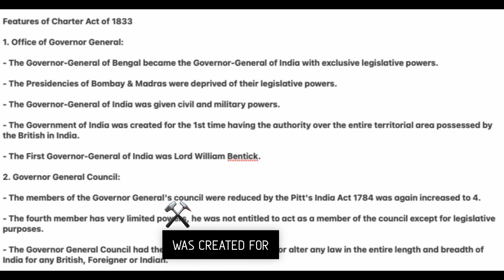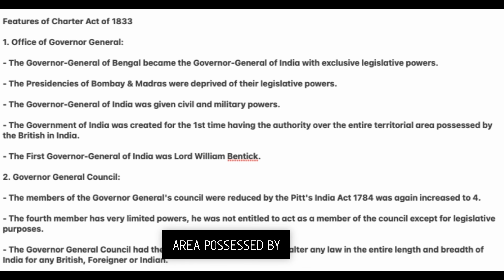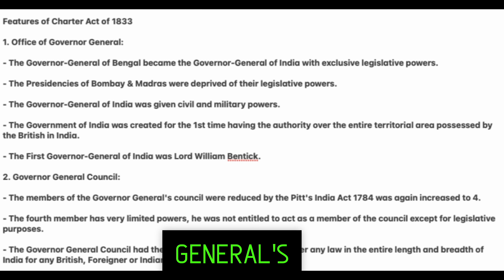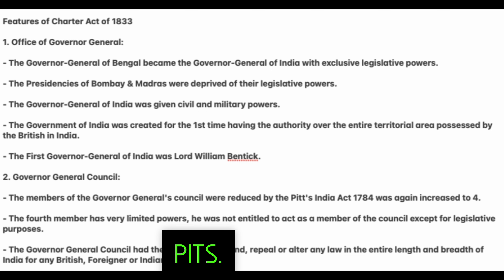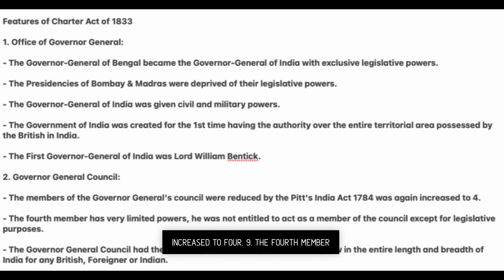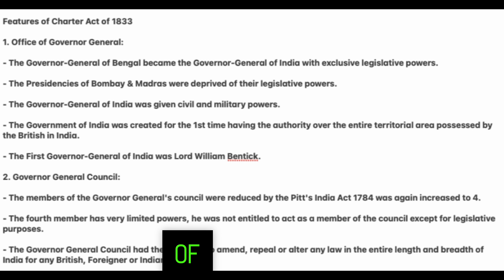The Governor General of India was given civil and military powers. The Government of India was created for the first time, having authority over the entire territorial area possessed by the British in India. The first Governor General of India was Lord William Bentinck. The members of the Governor General's Council, which had been reduced by the Pitt's India Act 1784, was again increased to four. The fourth member had very limited powers.